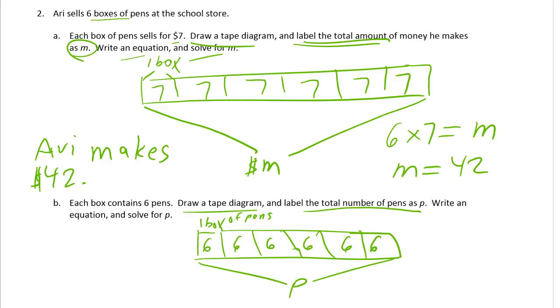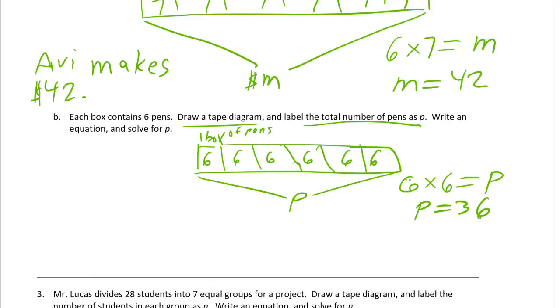And write an equation, which is 6 sixes equals P. P equals 36. There are 36 pens.